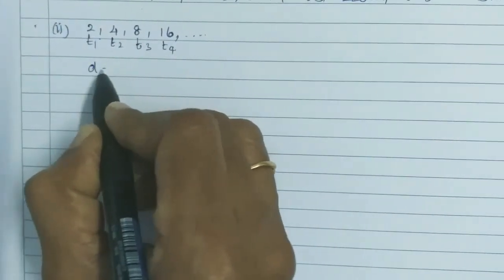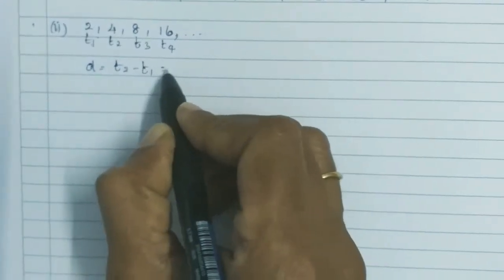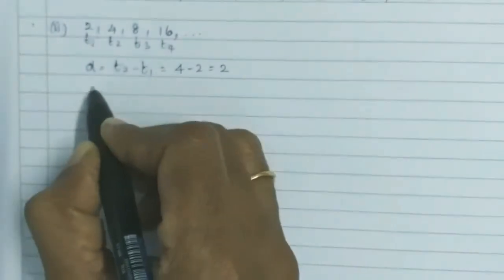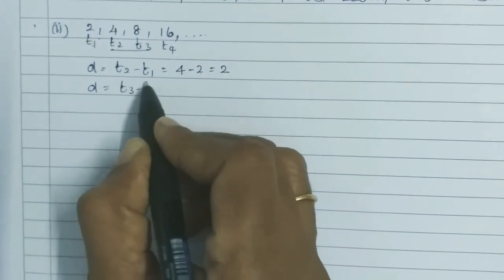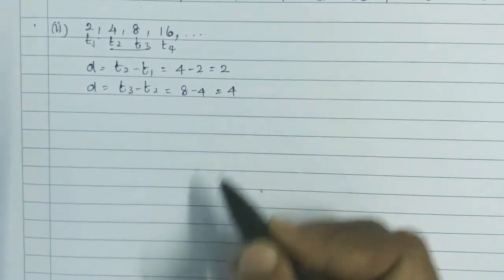How do we find D? T2 minus T1. T2 is 4, T1 is 2. Then 4 minus 2 is 2. Next, T3 minus T2, that is equal to 8 minus 4, which equals 4.